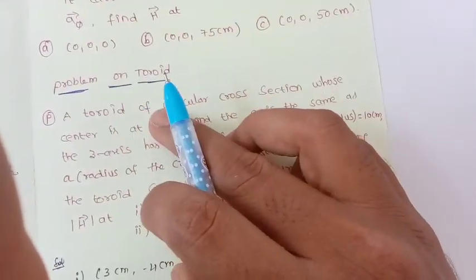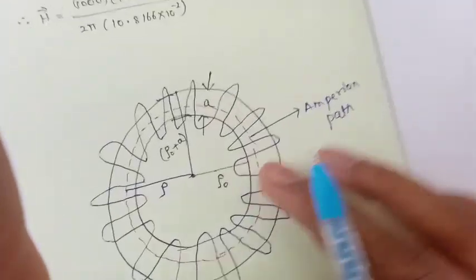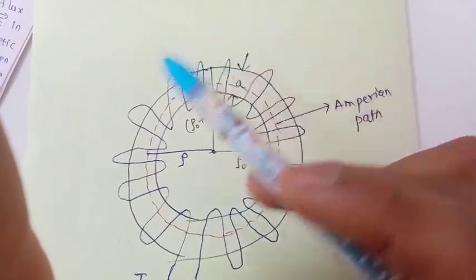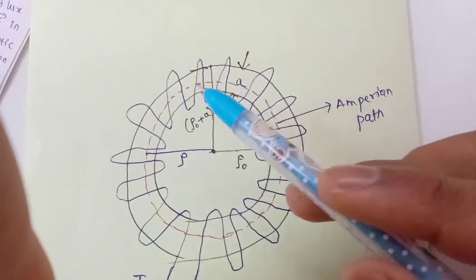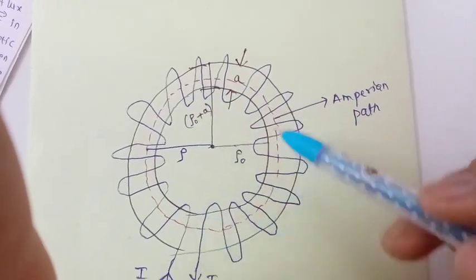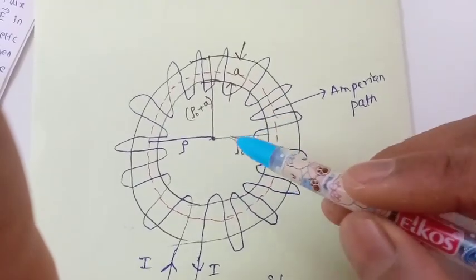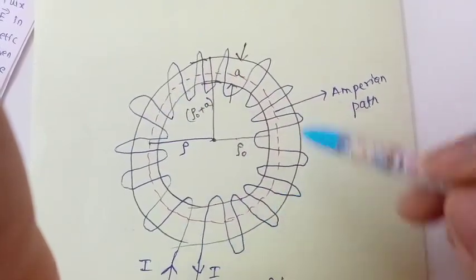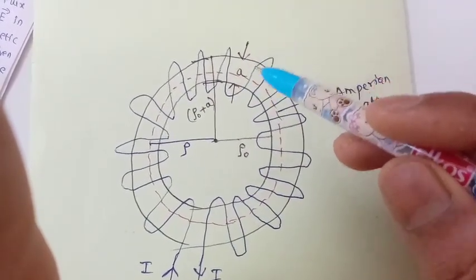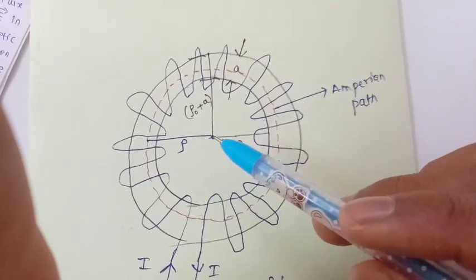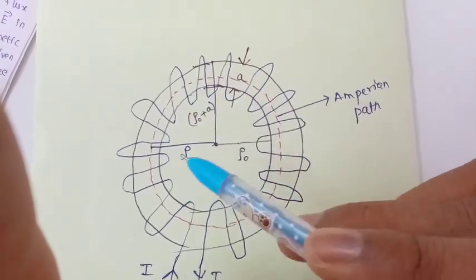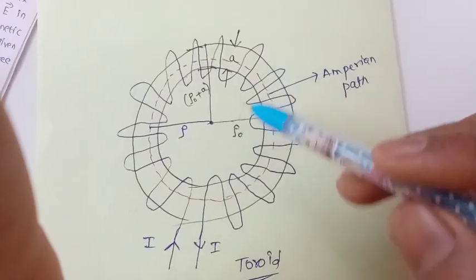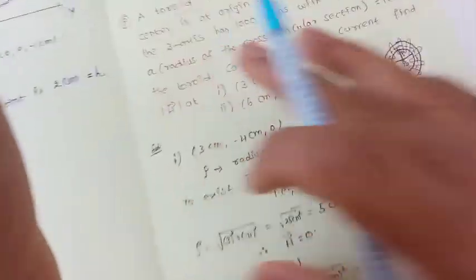Now a very important problem on the toroid. We know that inside the toroid the magnetic field is non-zero, and outside the toroid the magnetic field is zero. If ρ₀ is the inner radius of the toroid and a is the thickness, then ρ₀ + a is the outer radius. An Amperian path of radius ρ must satisfy ρ₀ < ρ < ρ₀ + a.